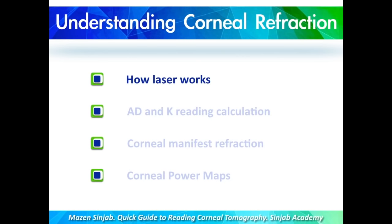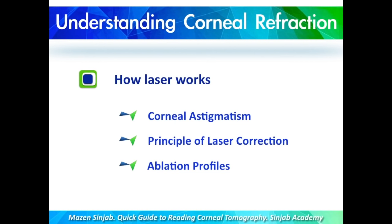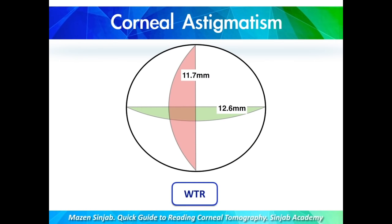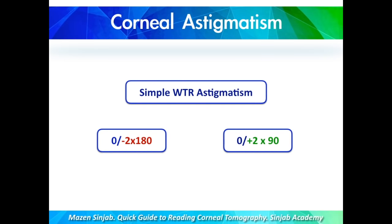Starting with how laser works, we will discuss this topic in terms of corneal astigmatism, principle of laser correction, and ablation profiles. In the normal cornea, the vertical meridian is steeper than the horizontal meridian, because the vertical diameter of the cornea is shorter than the horizontal one. This causes a kind of astigmatism called with-the-rule astigmatism, because the rule says the vertical meridian is steeper than the horizontal meridian. I'm going to discuss two simple cases of with-the-rule astigmatism.